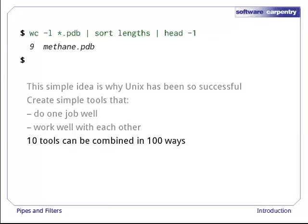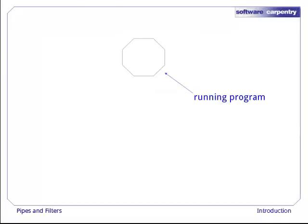Here's what actually happens behind the scenes when we create a pipe. We'll use an octagon to show a running program. The technical term for this is a process. It's a program that's actually loaded into memory and live.